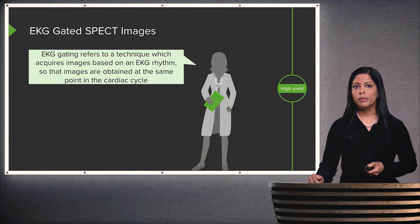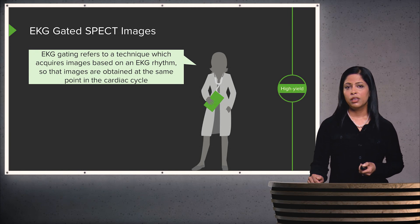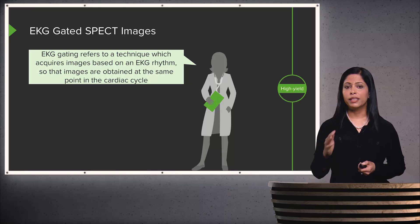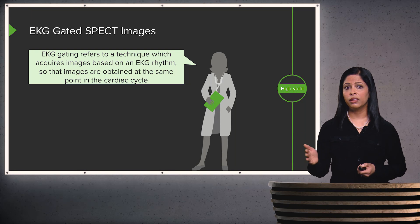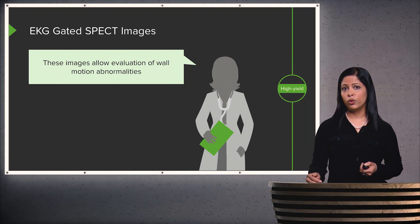You can also perform EKG gated SPECT images. EKG gating refers to a technique of acquiring images based on the EKG rhythm, so the images are obtained at the same point in the cardiac cycle each time. This allows for evaluation of wall motion abnormalities and can also be performed as one of the ways of conducting a cardiac scan.